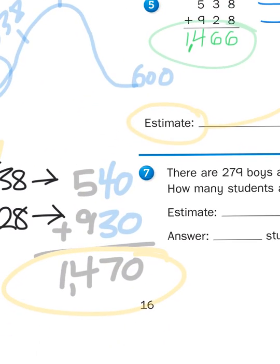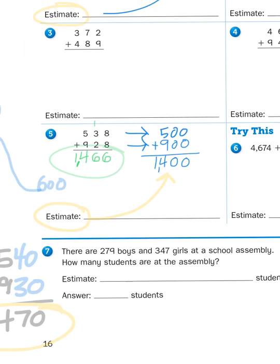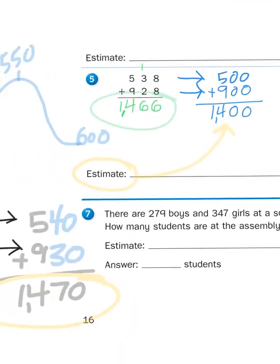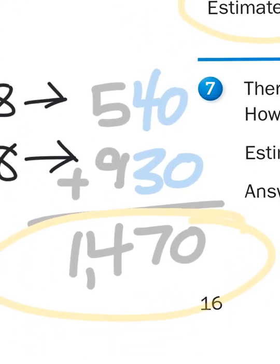So, there you go. You can choose two different ways to round a number based on how big the place value is. Since we were dealing with numbers in the hundreds, you had a choice between rounding to the nearest 100, like we did first, or rounding to the nearest 10, like we did here.